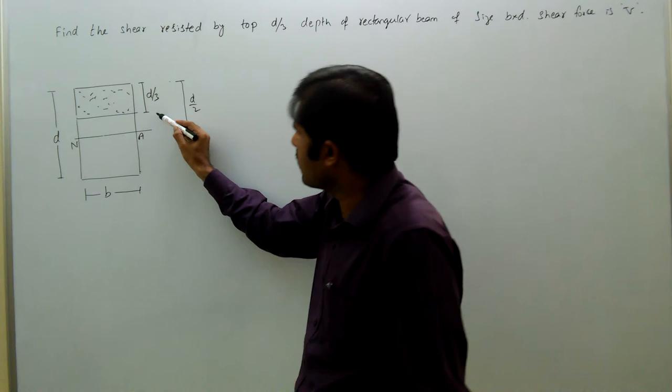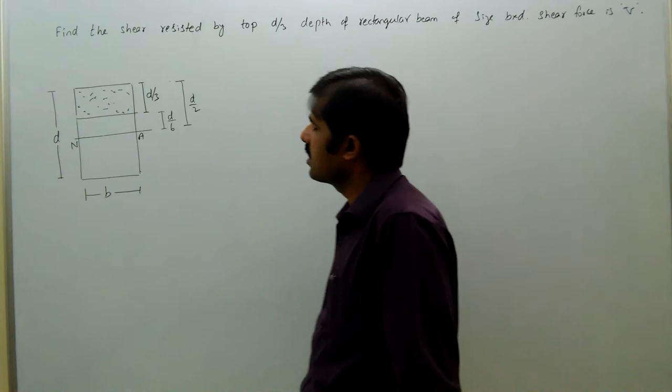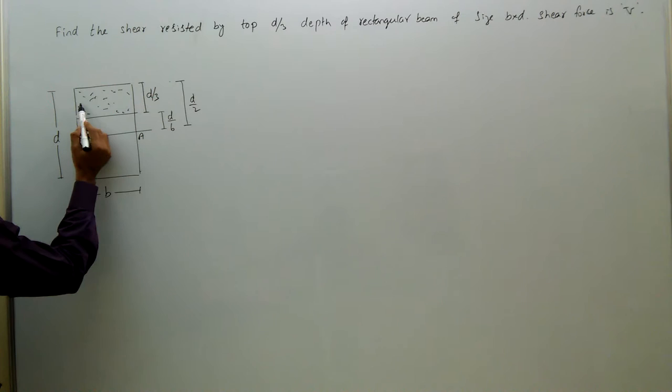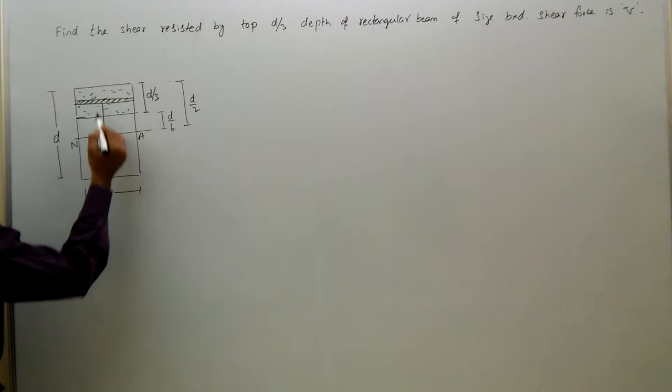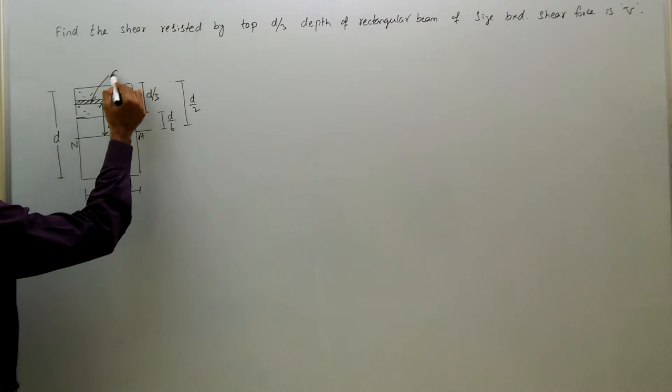That means this remaining, this one is now d by 6 because d by 2 minus d by 3 is d by 6. So, if you take a strip at a distance of y, strip thickness is dy.